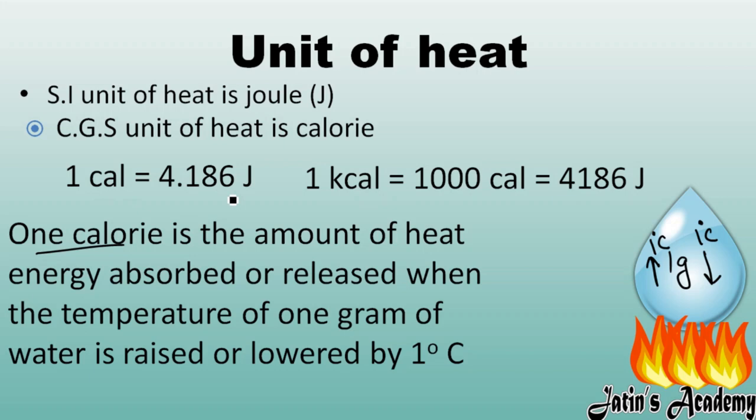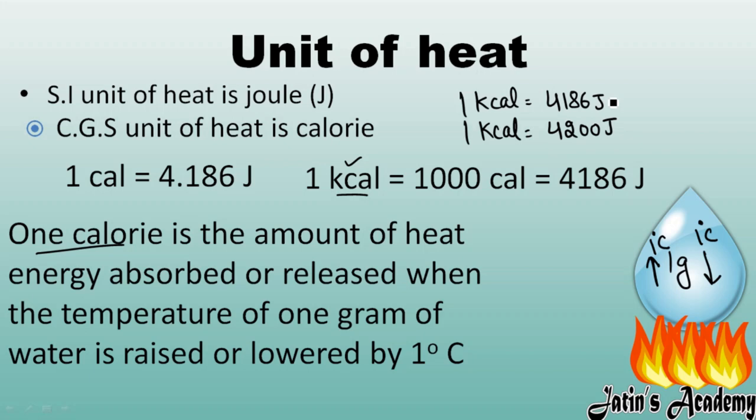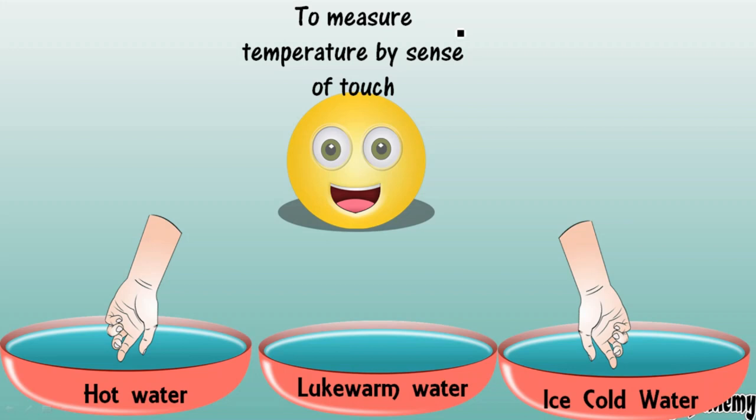Kilocalorie is the bigger unit of heat. One kilocalorie equals 1000 calories. In joules, one kilocalorie equals 4186 joules, or approximately 4200 joules. These relations are very important from an exam point of view.